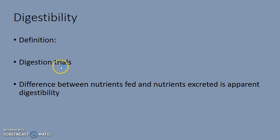A lot of times they'll run what are called digestion trials, and at bigger universities they do this all the time, looking at how much of a feedstuff is actually digestible by that animal. The difference between the nutrients fed and the nutrients excreted is the apparent digestibility. One of the more straightforward examples is the nitrogen component in feed — they'll look at the amount of nitrogen in the feed, collect fecal samples, and analyze those for the amount of nitrogen in the feces. That is a direct correlation of percent digestibility.